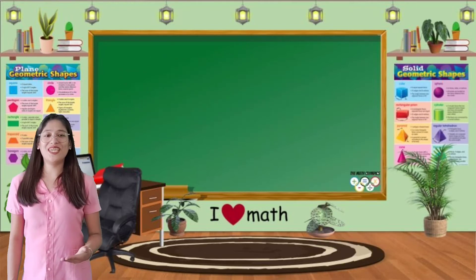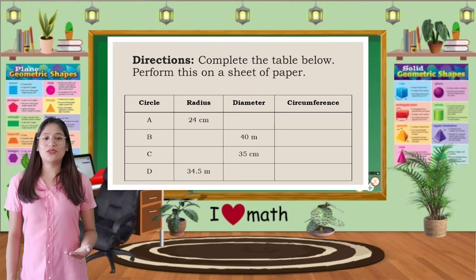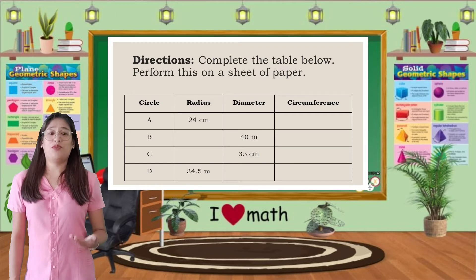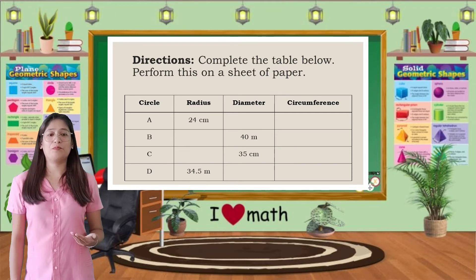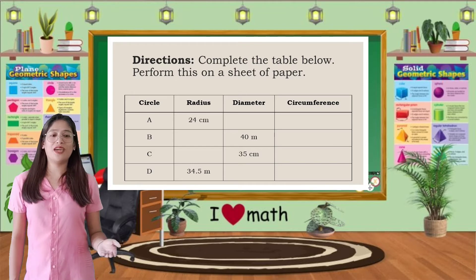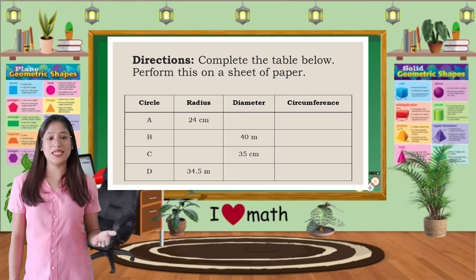Let's answer the following activity. The direction is to complete the table. Perform this on a sheet of paper. The given circles are A, B, C, and D.